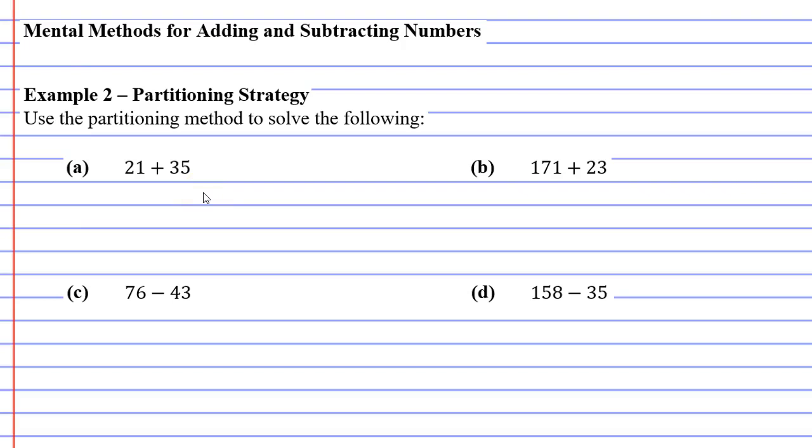Basically, you're going to think of the number not as 21, but more as 20 plus 1. You're going to separate it into its place value. And 35, we're going to think of that as 30 plus 5. Now, I'm writing this all down, but when you work these out, you're technically doing all this in your head. And then you're going, 20 plus 30 is really easy, that's 50. And 1 plus 5 is 6, so this one must be 56.